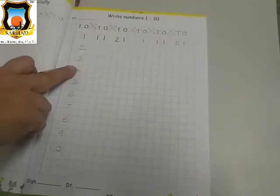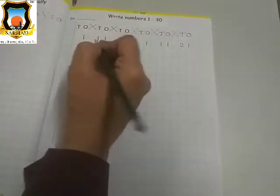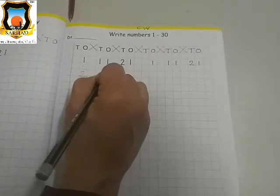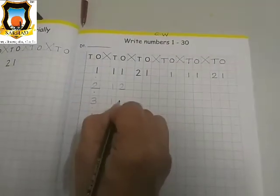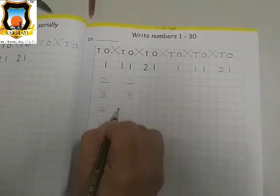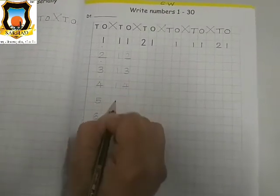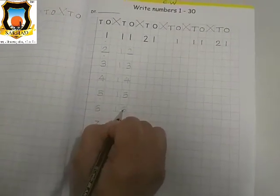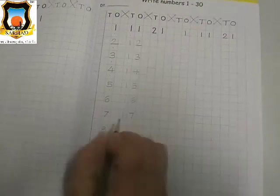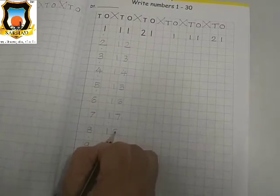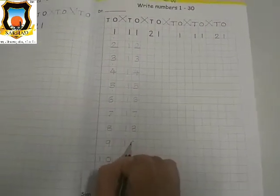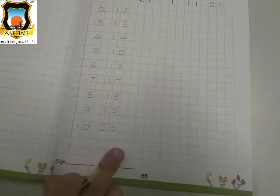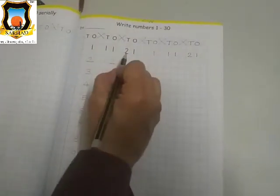Every time we have to put a pencil in the middle of the square and touch on the bottom line. Now we will write after 10. 10 and 1, 11. Again dot. 10 and 2, 12. Again dot. 10 and 3, 13. Again dot. 10 and 4, 14. Again dot. 10 and 5, 15. Again dot. 10 and 6, 16. Again give a dot. 10 and 7, 17. Then give a dot. 10 and 8, 18. Again dot. 10 and 9, 19. And after 19, 10 and 10, 20. Write 2, 0, 20.